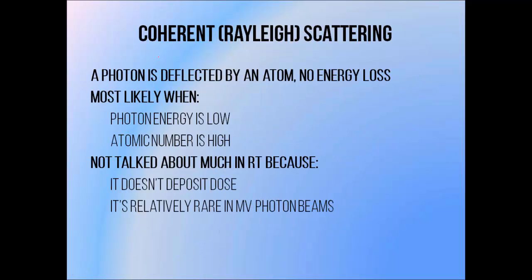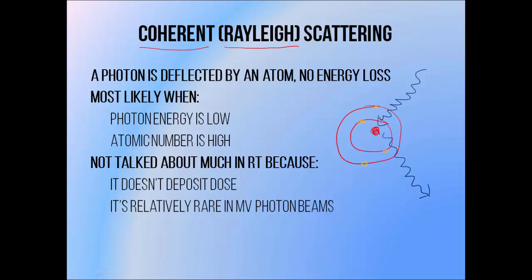The first interaction type is called coherent scattering, with coherent basically meaning that there's no energy transfer in the collision. It's also known as Rayleigh scattering after the man who discovered it. Essentially what happens is that a photon comes in, interacts with the electrons surrounding an atom, and is deflected without any change in energy. It is not discussed frequently in radiotherapy because it involves no energy transfer and therefore no deposition of dose. It's also relatively rare in radiotherapy beams because it occurs most often when the beam energy is low and the atomic number of the material is high.